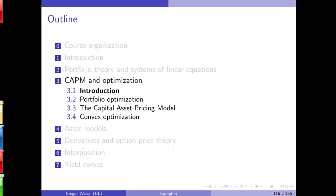This is a simple iterative method for solving a system of linear equations. Now let's start with the third chapter: CAPM and Optimization. As I mentioned in the first lecture, computational finance — at the intersection of finance, mathematics, and optimization — is often about option pricing and portfolio optimization. In this third chapter we will talk about portfolio optimization, portfolio theory, the capital asset pricing model, and optimization algorithms.